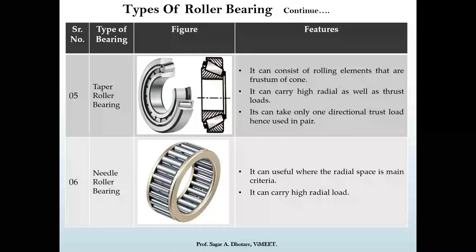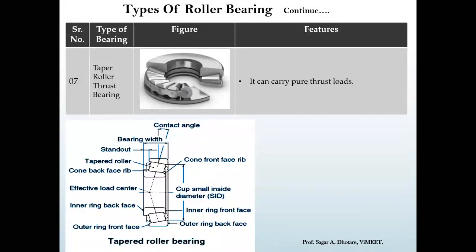The next type is the needle roller bearing. Here the rolling element has a minimum radius but the length is increased significantly, making the bearing size larger in the axial direction but small in radial space. Whenever radial space is the main constraint, needle roller bearings are used. They have high radial load carrying capacity. The last type in the roller bearing segment is the taper roller thrust bearing, which takes purely axial or thrust load — with higher capacity than a ball bearing thrust type.